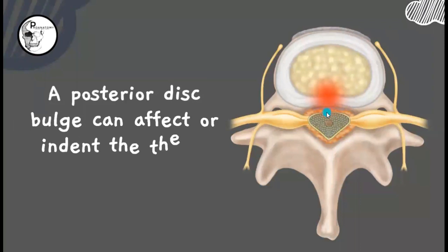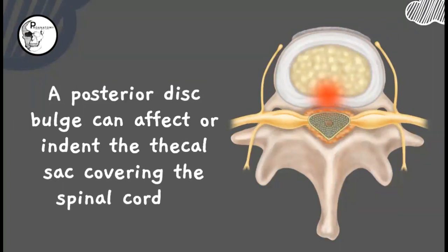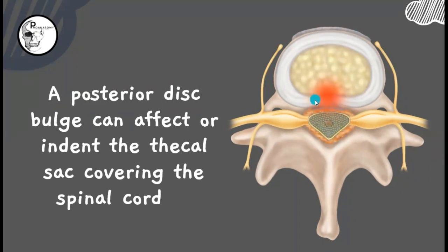Now let's discuss what thecal sac indentation is, specifically related to a posterior disc bulge. Here you can see the intervertebral disc representation, with the spinal cord covered by the thecal sac or dura mater. If any bulge of the disc occurs posteriorly, it projects backwards and indents or affects the ventral part of the thecal sac — compressing the anterior aspect of the spinal cord — and that causes thecal sac indentation.